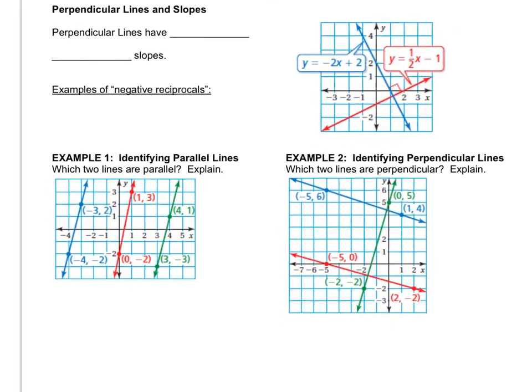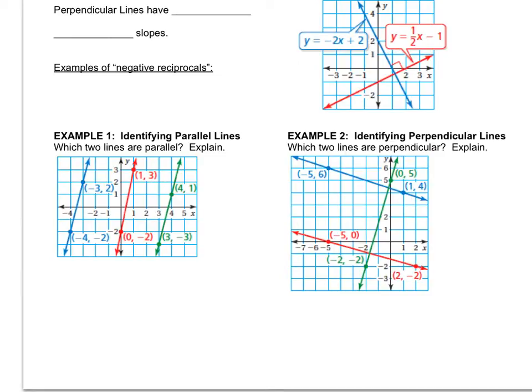Example one asks us which two lines are parallel, and then we have to explain. Now you don't have colors on your paper, so you'll just follow along with me. You can number them or letter them, whatever you want.